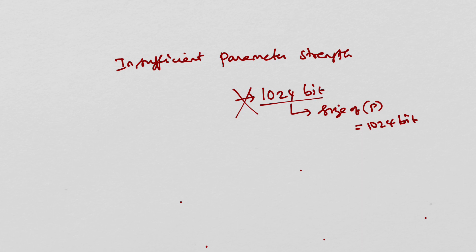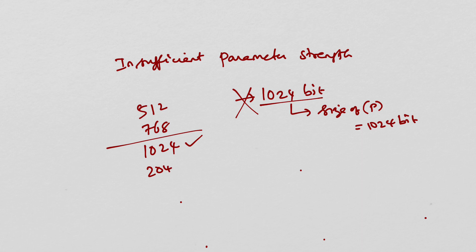In short, 512-bit is no longer secure, 768-bit is no longer secure. Even though 1024-bit is not practically broken, people believe that some powerful agencies have the capability to break it, so in practice you should not use it. Unfortunately, many servers on the internet are still using 1024-bit. The most safe size for Diffie-Hellman parameters nowadays is a minimum of 2048-bit — this is the recommended size.